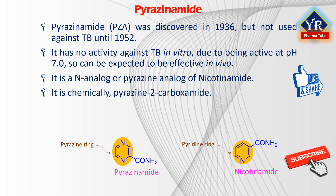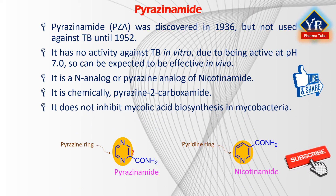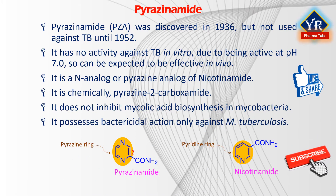Pyrazinamide is chemically known as pyrazine-2-carboxamide. Despite its structural similarities to isoniazid and ethionamide, pyrazinamide apparently does not inhibit mycolic acid biosynthesis in mycobacteria. It possesses bactericidal action only against mycobacterium tuberculosis, as it is bactericidal against growing bacteria and is responsible for shortening the therapy to 6 months.